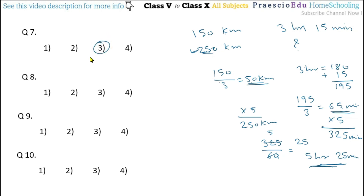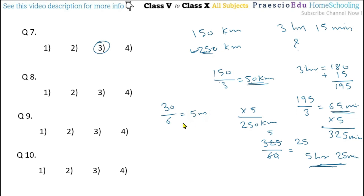Question number 8: A 30 meter long rope is cut at 5 places. What will be the length of 2 pieces? Cutting at 5 places gives 5 plus 1 equals 6 pieces. So 30 divided by 6 equals 5 meter each piece. The length of 2 pieces is 5 multiplied by 2 equals 10 meter. This is given in option number 2.